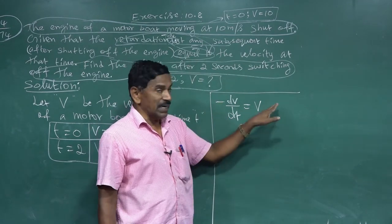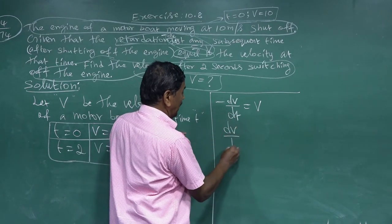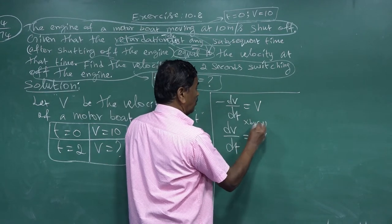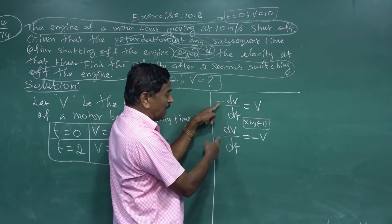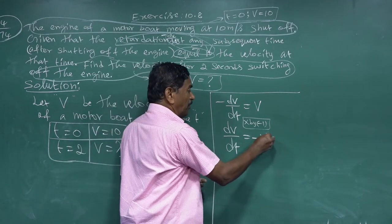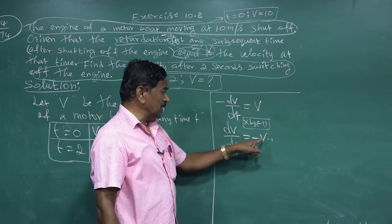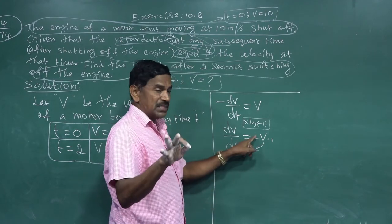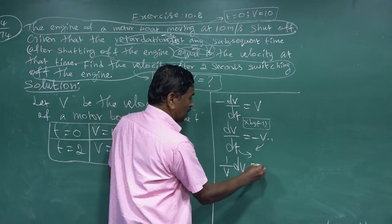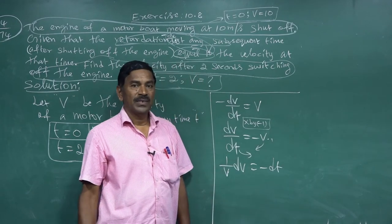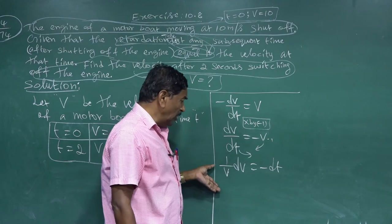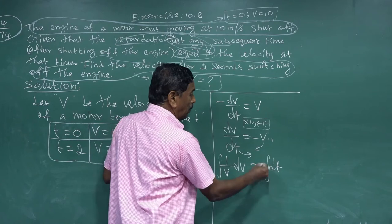Using variable separable method, keep the minus on the right side. Multiply both sides by minus one to get dv/dt equals minus v. Separate variables: bring v to the left side as one-over-v, and dt goes to the right side. So we have (1/v) dv equals minus dt. Now integrate both sides.